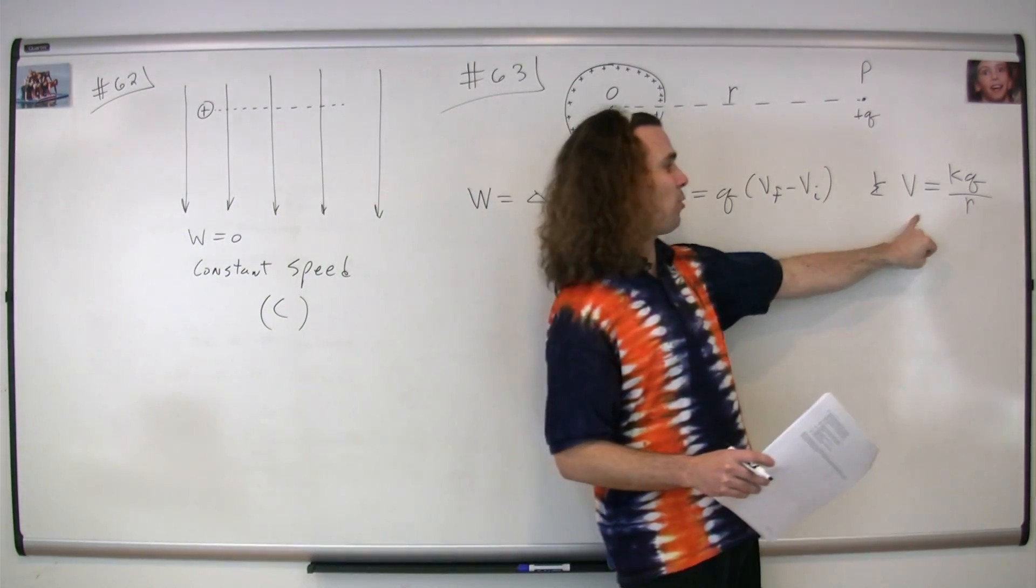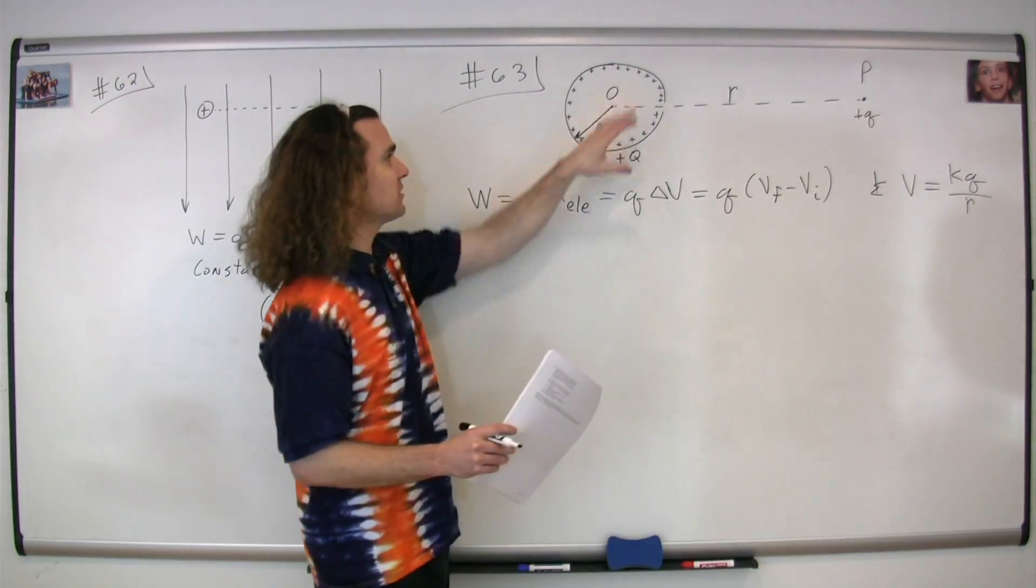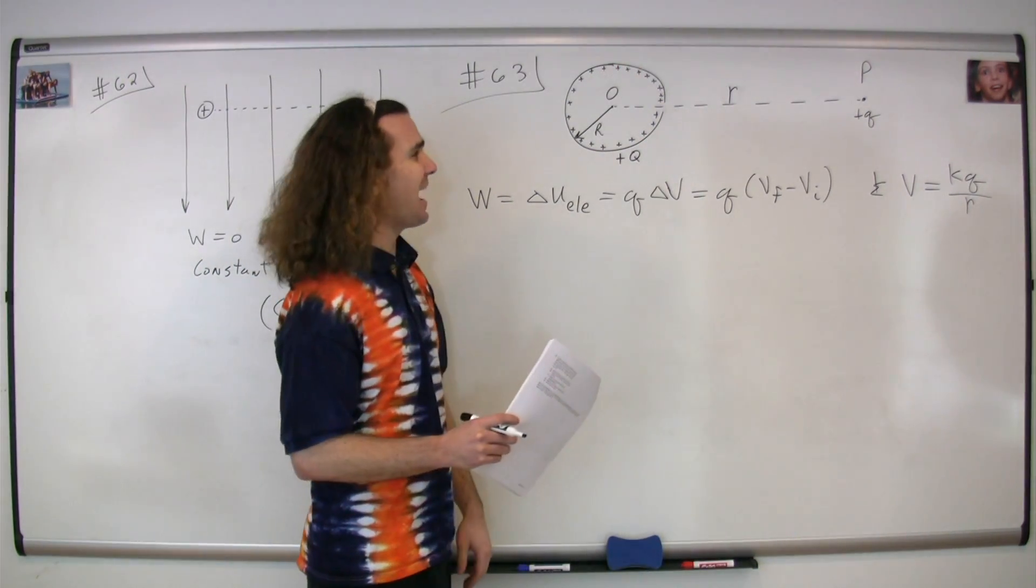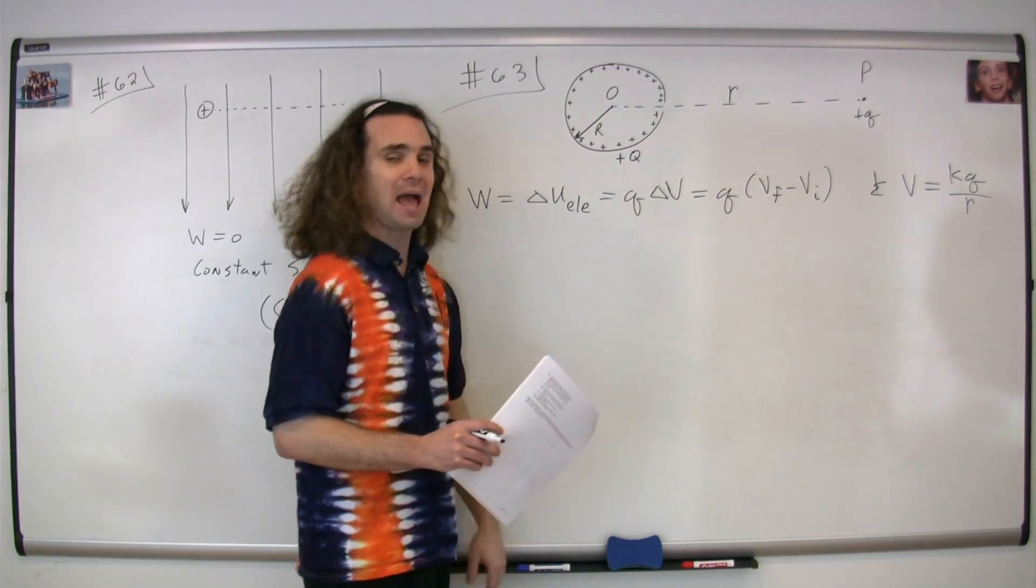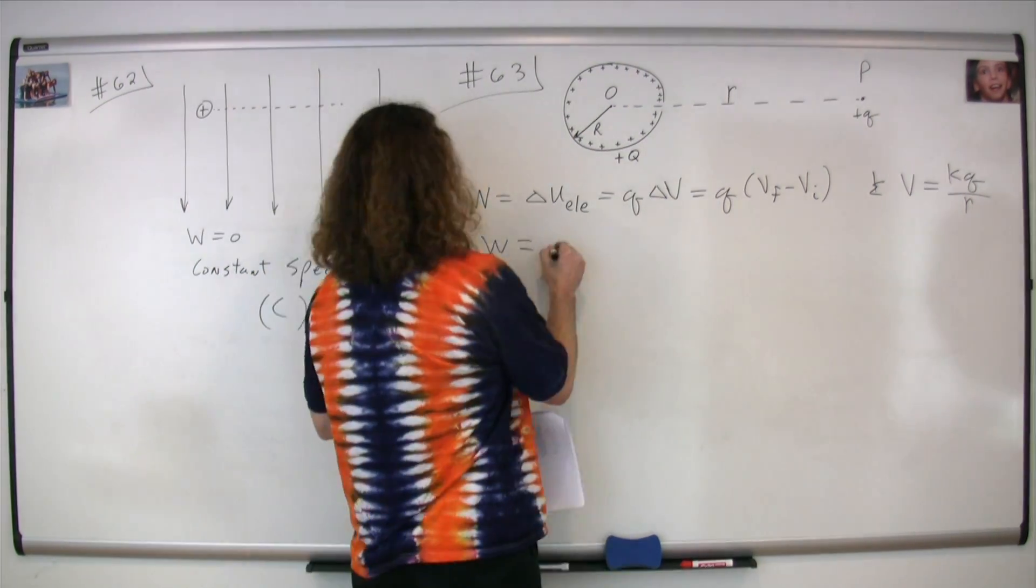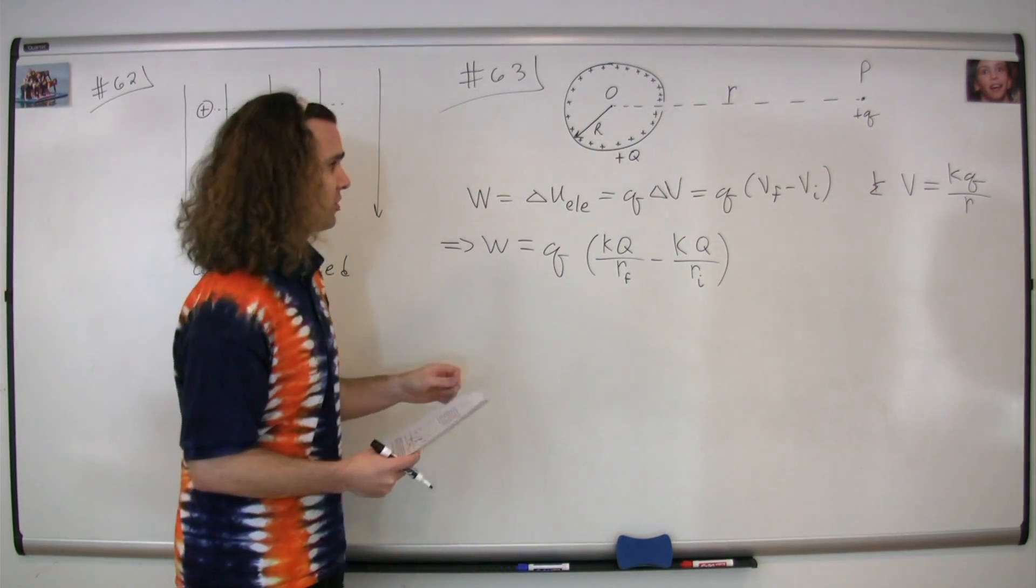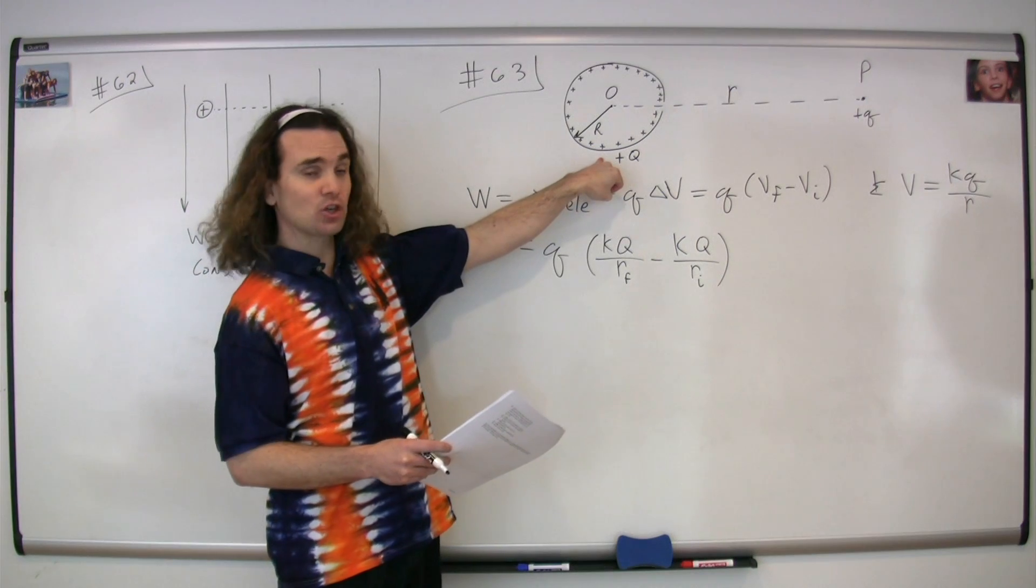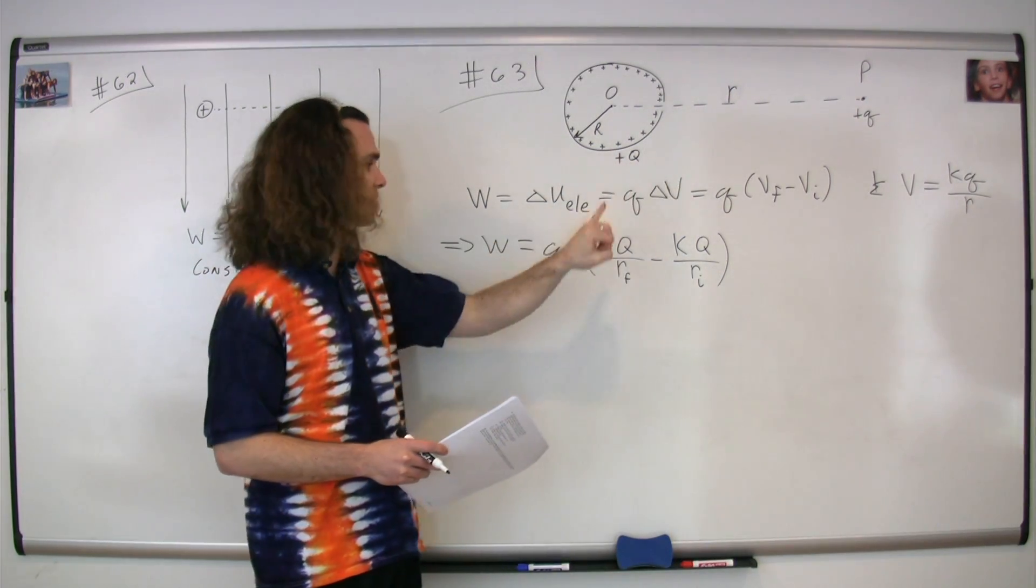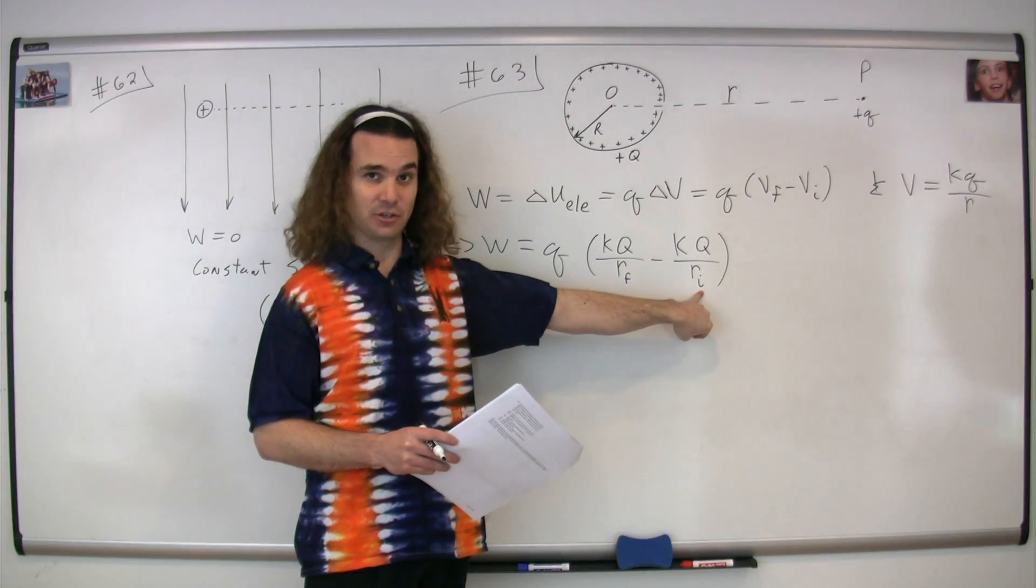The electric potential caused by a point charge is kQ over r. As long as we're outside this sphere, it acts like a point charge. We'll talk about going inside in a bit, but we start outside the sphere. Plugging in the equation for electric potential: k times big Q divided by r. So it's r final minus r initial.